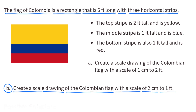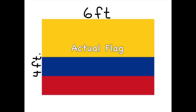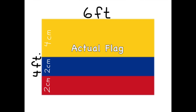Part B: create a scale drawing of the Colombian flag with a scale of 2 centimeters to 1 foot. The actual Colombian flag is 6 feet long and 4 feet tall. Since the scale is 2 centimeters for every 1 foot, the 6-foot section would be 12 centimeters because 6 times 2 is 12, and the 4-foot section would be 8 centimeters because 4 times 2 is 8. The red stripe would be 2 centimeters tall, as would the blue stripe, and the yellow stripe would be 4 centimeters tall.